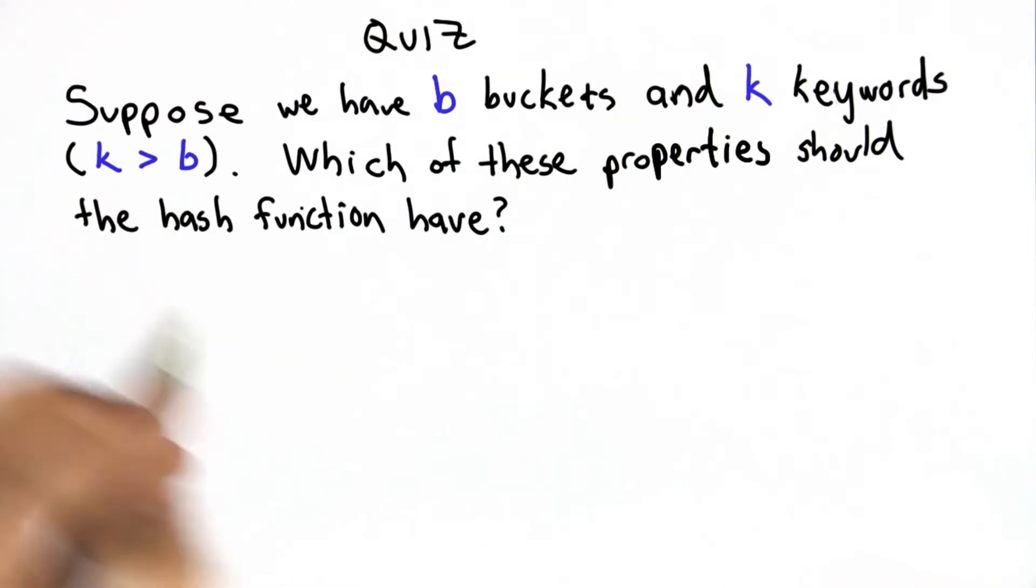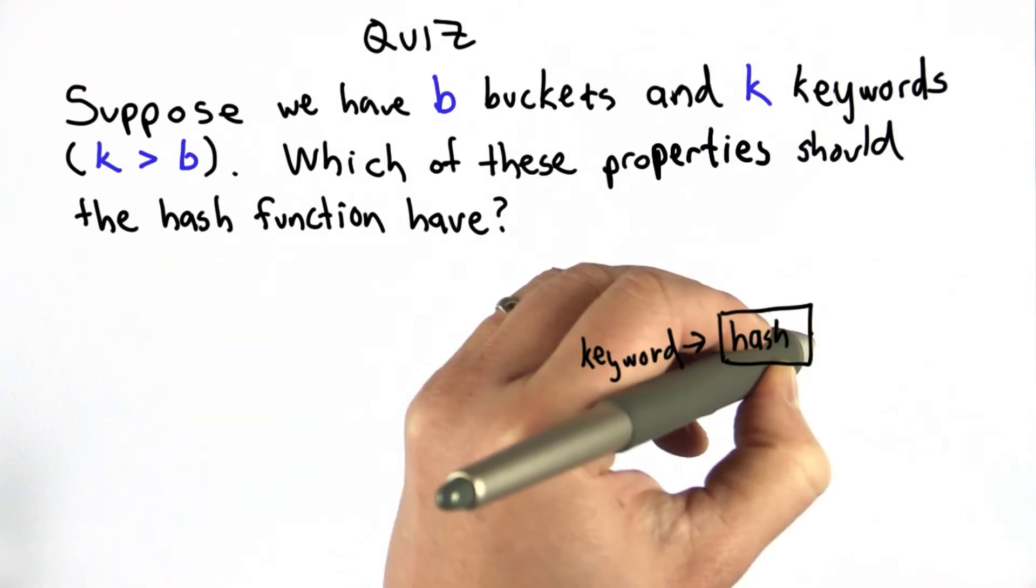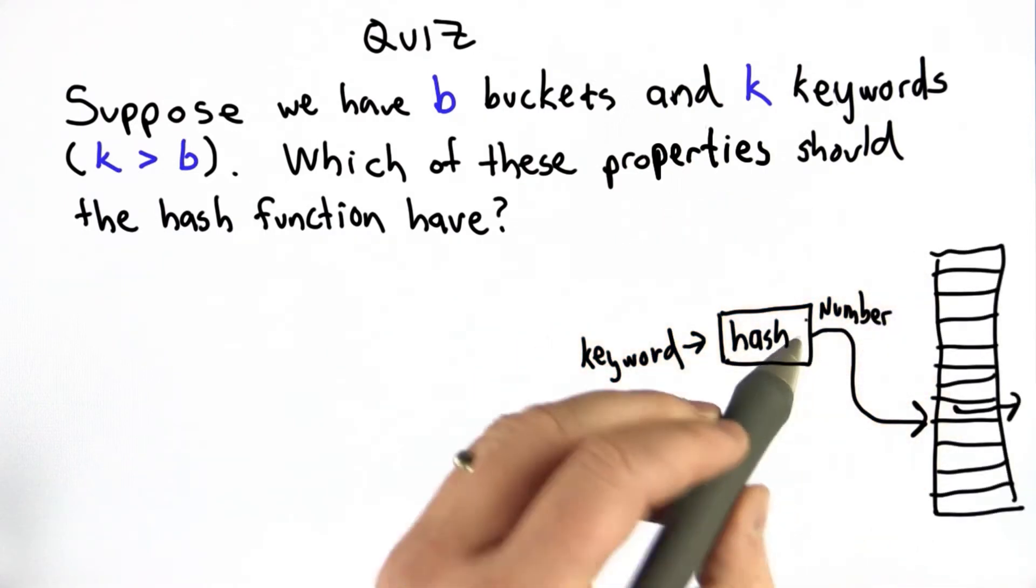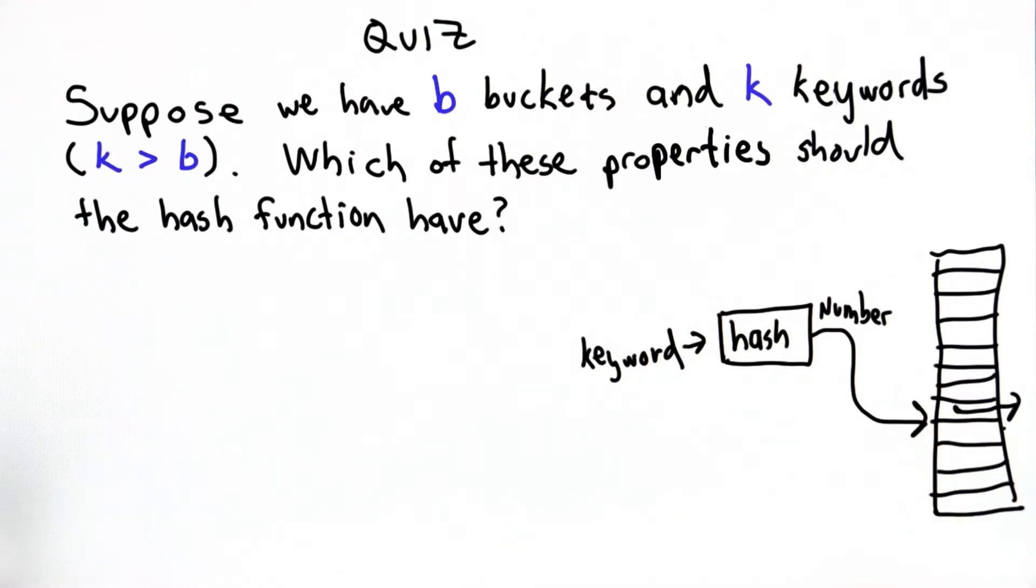The question is which of the properties should the hash function have. And remember what the hash function is, it's a function that takes in a keyword, produces a number, and what that number does is gives us the position in the hash table, which is the bucket where that keyword would appear.